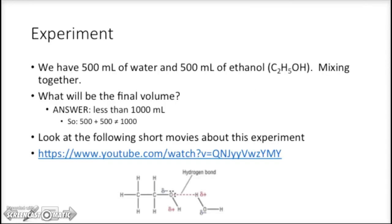Let's do an experiment. Not really, but there's a movie. We have 500 milliliters of water and 500 milliliters of ethanol. And ethanol contains the OH group, mixing together. What will be my final volume? You would say 1000. But the answer is no, it's less than 1000. So 500 plus 500 doesn't equal 1000. Don't tell your math student, but for chemistry, for this experiment, it's true.